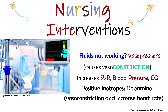If IV fluids are not enough to maintain tissue perfusion, vasopressors can be used. These drugs cause vasoconstriction — and we need that because we have major vasodilation. The sympathetic nervous system isn't controlling vasomotor tone, so we need something to help those vessels constrict. This will increase systemic vascular resistance, which increases blood pressure and cardiac output. Dopamine is another option — it's a vasopressor with positive inotropic effects that will vasoconstrict and increase heart rate, which together increases tissue perfusion.